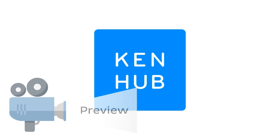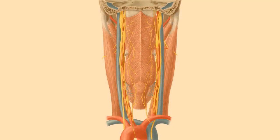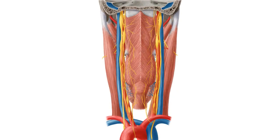Hello everyone, this is Juan from KenHub and welcome to another anatomy tutorial where this time we're going to be talking about the nerves of the parapharyngeal space. Now this might seem a complicated topic but it is not. It's a very short topic where we're going to be describing some of these nerves that you see here on this image. Now we're looking at the posterior view of the neck.